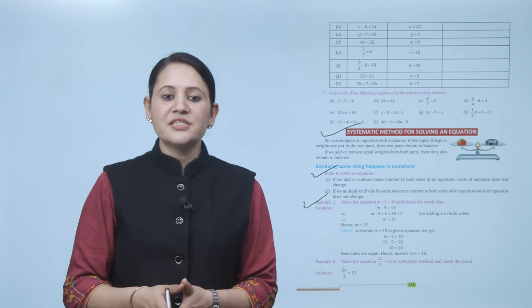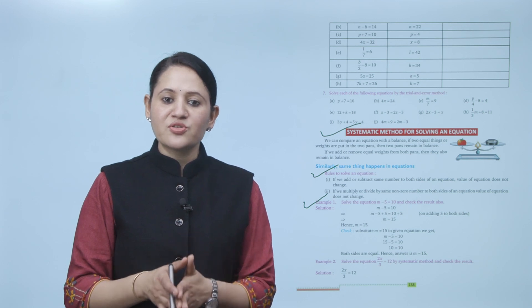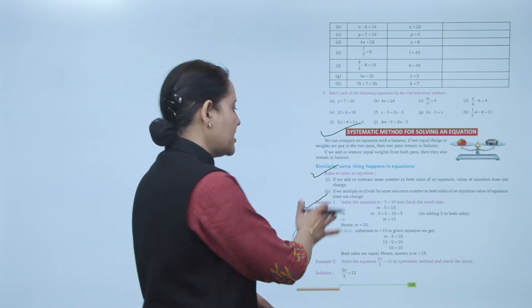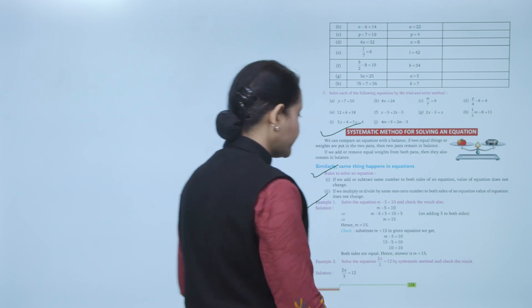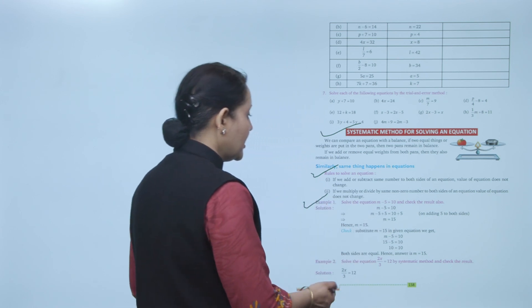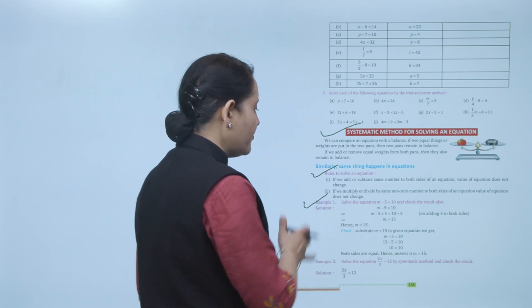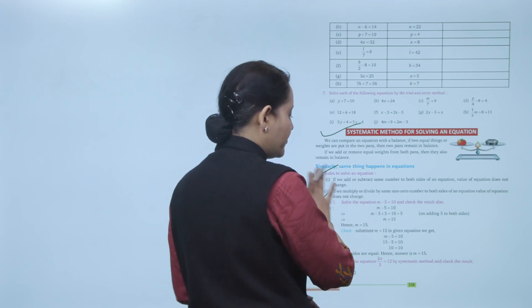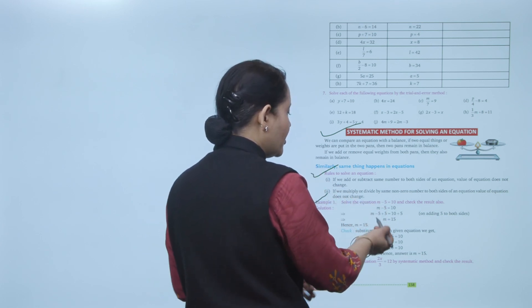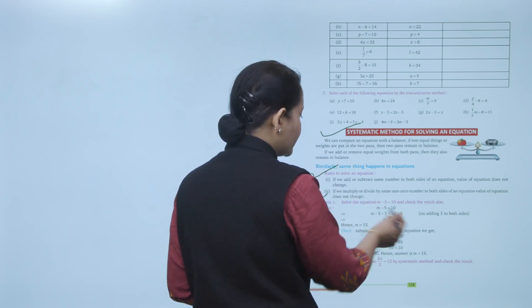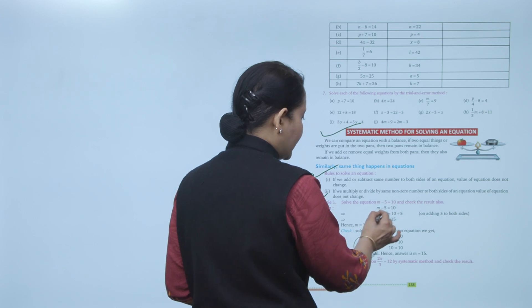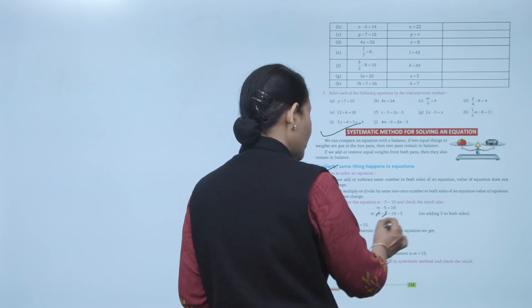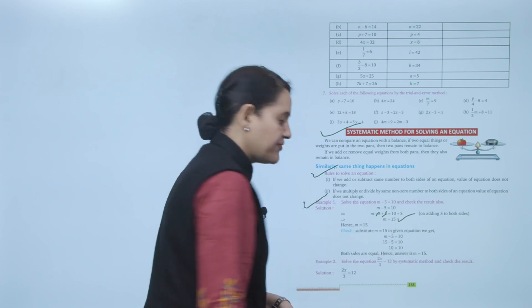Example: solve m minus 5 equals 10 and check the result. To find the value of m, we need to remove the 5 from the left side. So we add 5 to both sides of the equation.